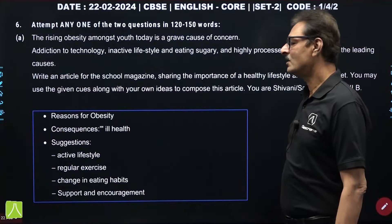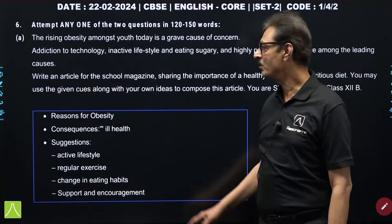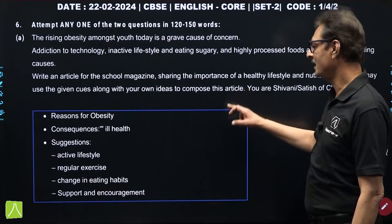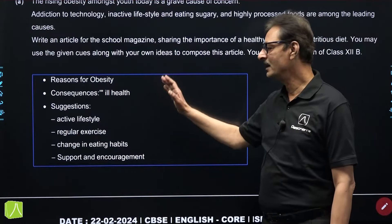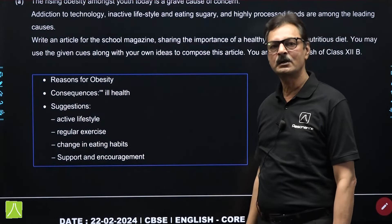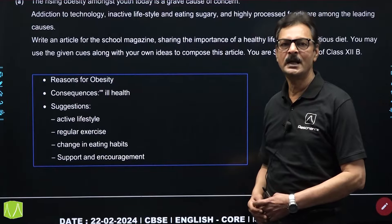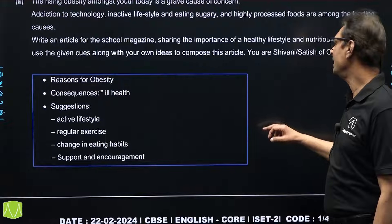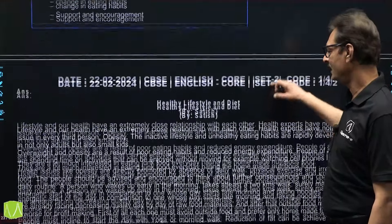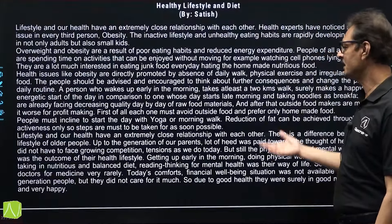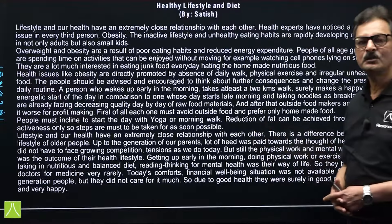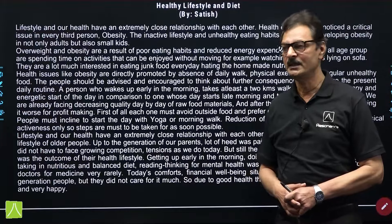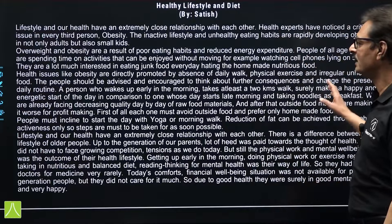Moving on to the last of the writing section — long composition. The first question was based on article writing. Again, things were easier and simplified because the basic points and clues were provided to the students. You just had to enhance on those points and come up with a simple article on the topic of healthy lifestyle. I have tried to put up the solution in simple words — you can go through it. The detailed solution can also be downloaded from our official website; the PDF will be provided there as well.